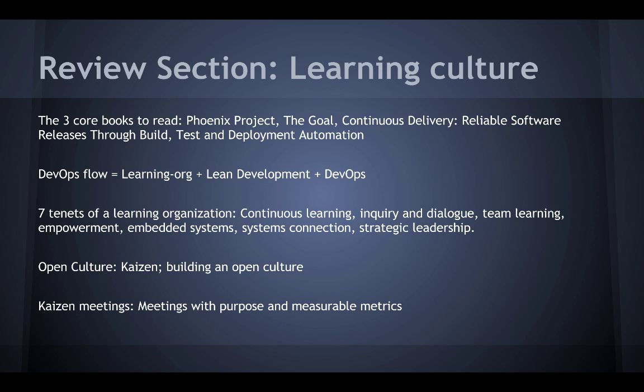Let's review what it takes to have an open culture. The main concept is to practice Kaizen and always be improving. Go over how to build an open culture using the guidelines in the course. Use the meeting framework outlined in the course to have Kaizen meetings with clear agendas, time constraints, and measurable outcomes.